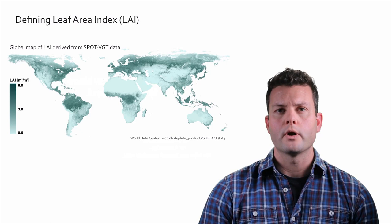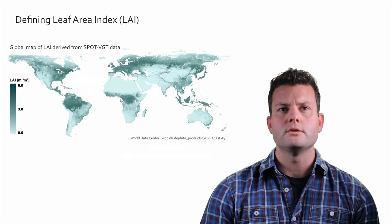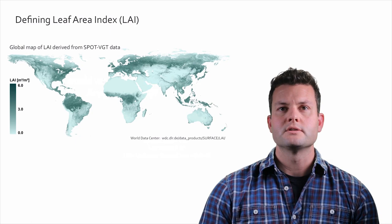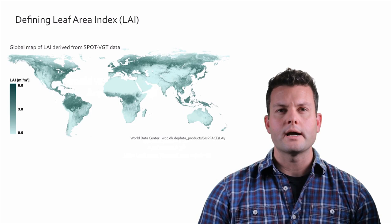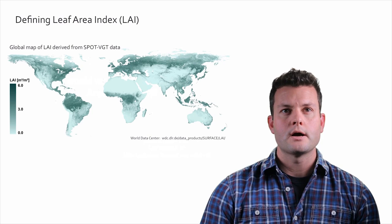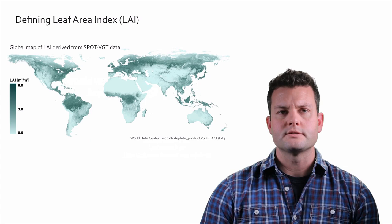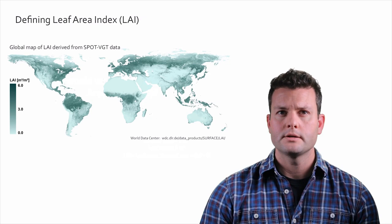Moving either north or south of the tropics, you can see where deserts occur with very low LAI. Moving further toward the temperate and boreal zones, LAI picks up again. These patterns are reflective of many processes and variables — water availability, light availability — and LAI is very descriptive of the patterns of world vegetation, just as one example.